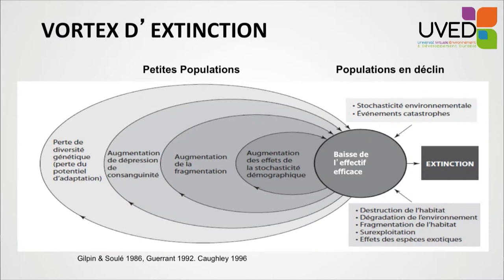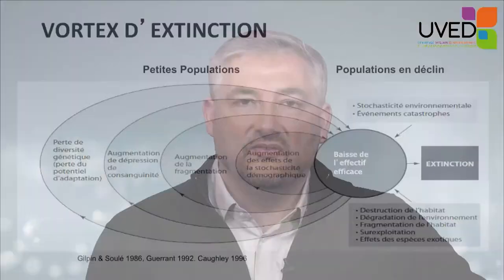This translates to what we call the extinction vortex — erosion of biodiversity for small populations, resulting in environmental impacts, natural factors of environmental stochasticity with possibly catastrophic events. Added to this is the impact of human activities, including destruction, degradation, and fragmentation of habitats, over-exploitation of some species, introduction of exotic species interacting with local target species, and the effects of climate changes.